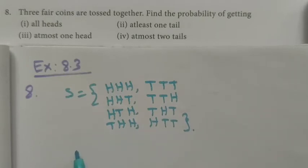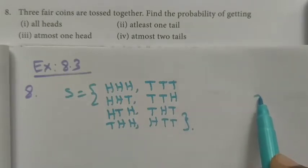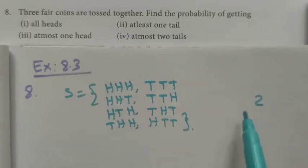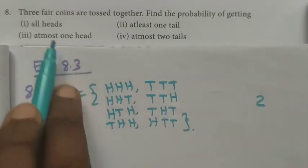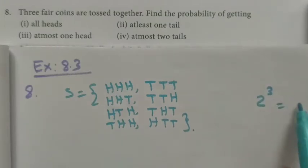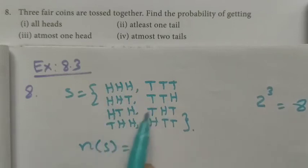We know that a coin has two sides — head and tail. We are tossing three coins, so the total number of outcomes is 2 cubed, which is 8. So the total number of sample space elements is 8.